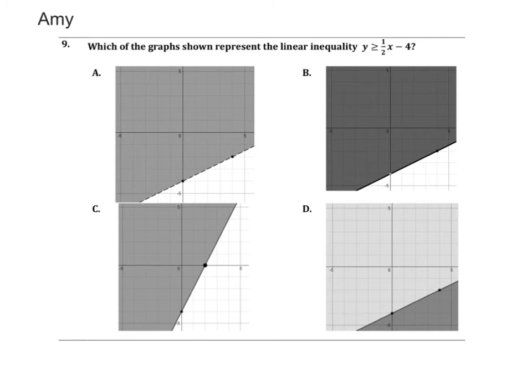Which of the graphs shown represent the linear inequality Y is greater than or equal to one half X minus 1? So we know that the Y intercept is negative 4 and the slope is one half. So we're going to find the points that have the Y intercept which is negative 4.